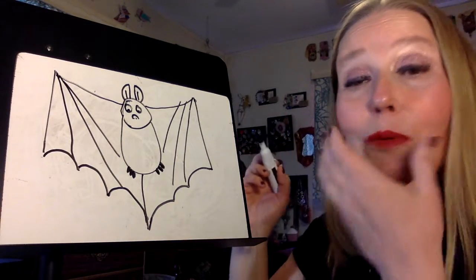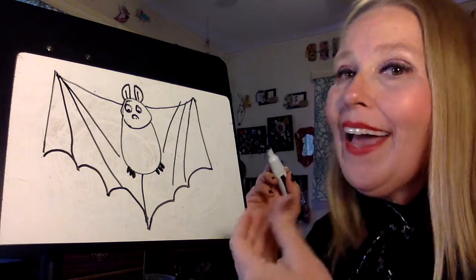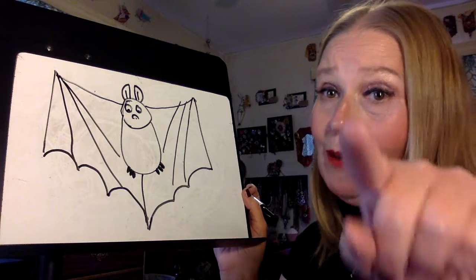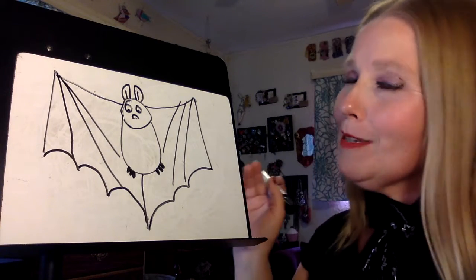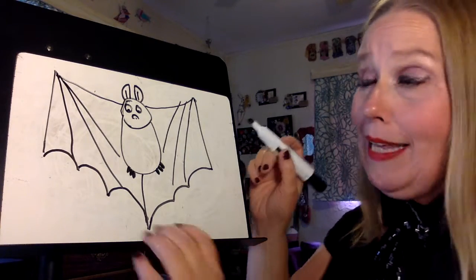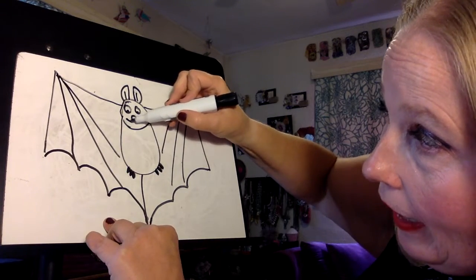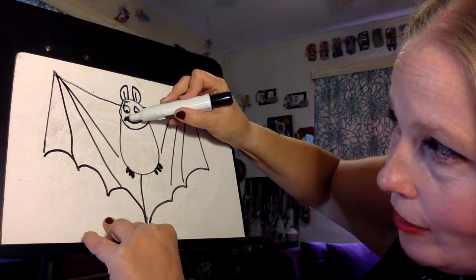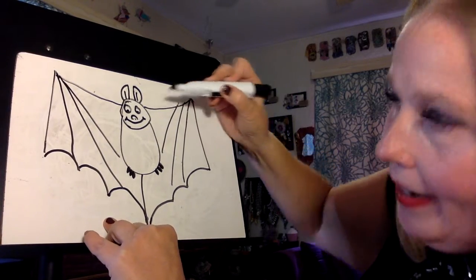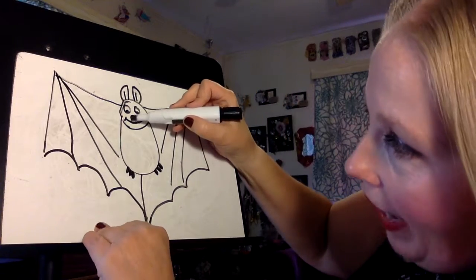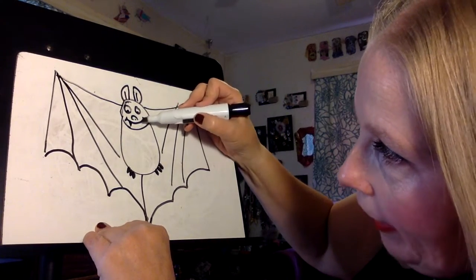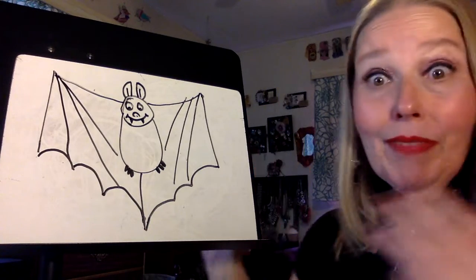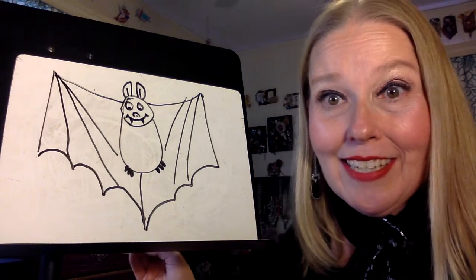And last but certainly not least, we're going to add a bat's mouth. Now, for those of you who spent some time drawing with me, you'll know that anytime I spend drawing with you is a time that makes me happy. So I'm going to try and make my bat as smiley as possible. So I'm going to start by making a smile across my bat's face. I'm going to turn it up a little on each side. And the last step, I'm going to add two upside down triangles for its fangs or its teeth. And there you have it, ladies and gentlemen.